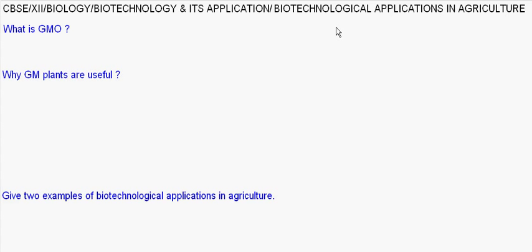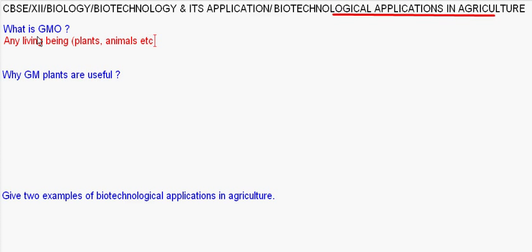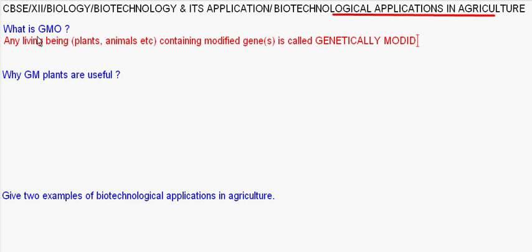We are going to discuss biotechnological applications in agriculture. First, we must know what is GMO. GMO stands for genetically modified organisms. Any living being, like plants, animals, etc., containing modified gene or genes is called a genetically modified organism.